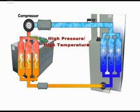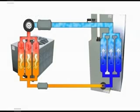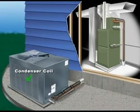Now we have refrigerant at a high temperature — and yes, that is good. From the output of the compressor, the high temperature refrigerant now enters what is called the condenser. This component is where the heat in the refrigerant, which is now at a higher temperature than the surrounding outside air, is able to be transferred.